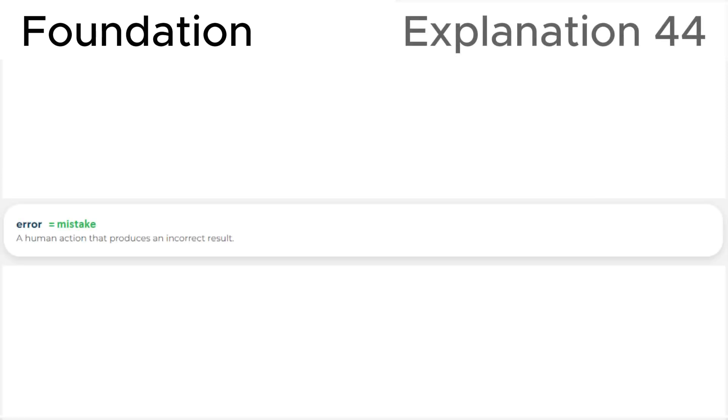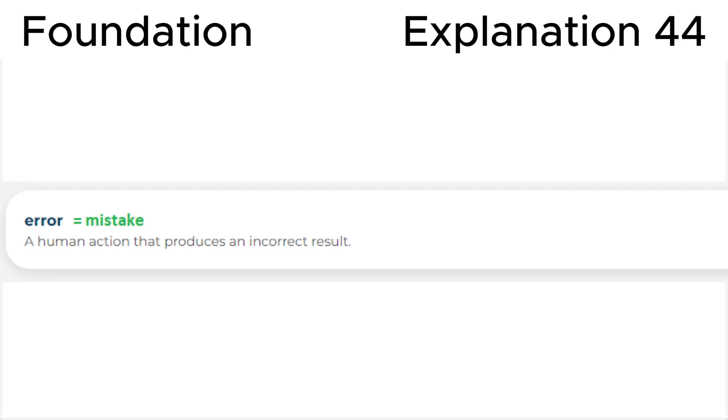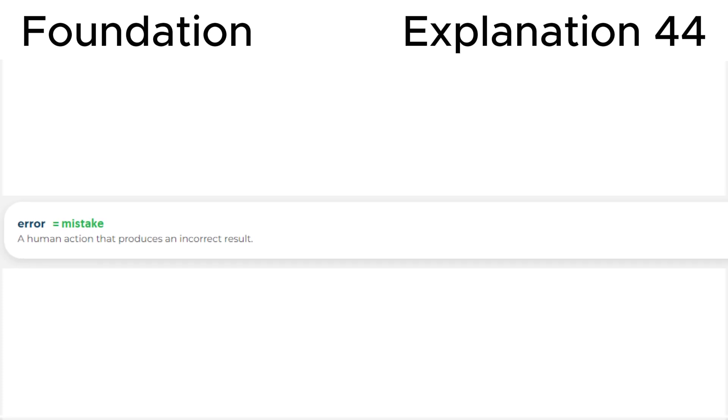Explanation. Firstly, let's look at definition of mistake in the ISTQB glossary. Mistake, or error, is a human action that produces an incorrect result. This is fully consistent with the correct answer C.